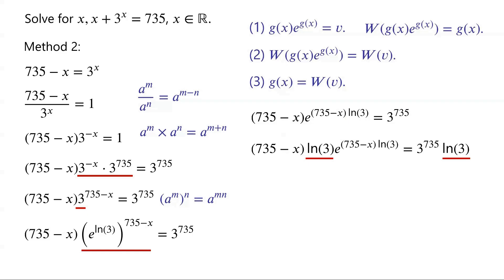Apply the Lambert W function to both sides of the equation. The left-hand side of the equation is (735 minus x) times ln(3). The right-hand side of the equation is W of 3 to the power of 735 times ln(3).